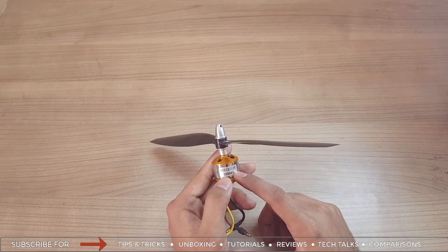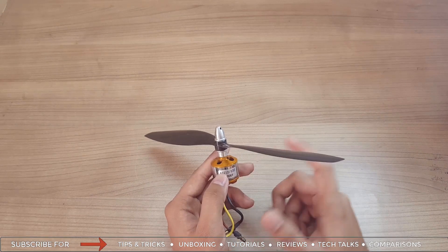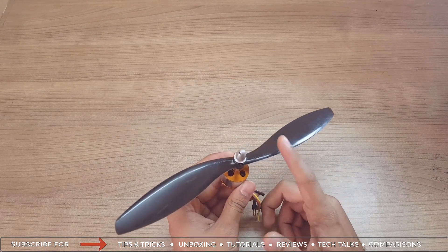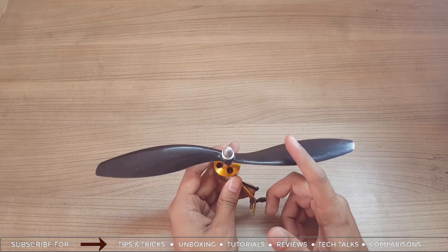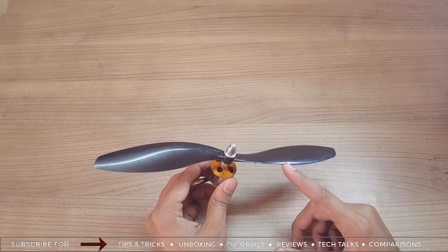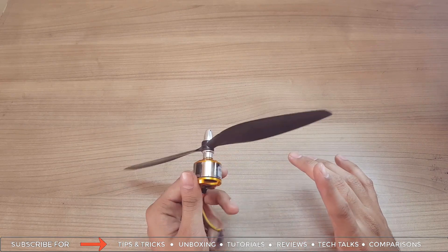I would recommend you to use 1000 KV or 1200 or maximum 1400 KV, and a 10-inch propeller is recommended. You can even go for 8-inch propeller, that is up to your choice. You cannot find a single propeller - this comes in pairs, one for clockwise and one for counterclockwise.